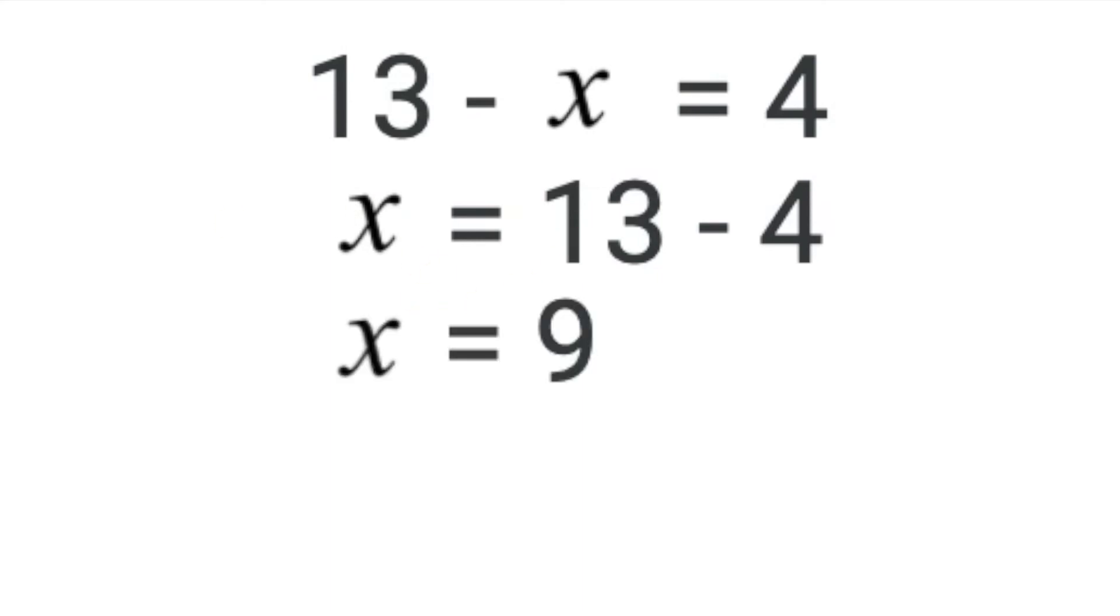And so there we have it. When our subtrahend, our smaller part, is unknown, we can swap places with the difference, because they are both the smaller pieces of the minuend, and subtract them as we would regularly subtract them.